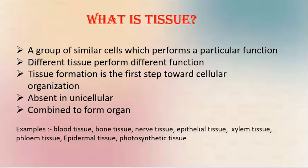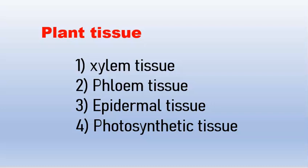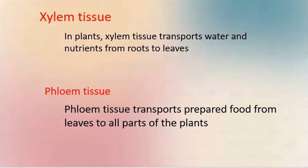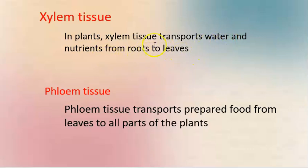Plant tissue includes xylem tissue, phloem tissue, epidermal and photosynthetic tissue. In plants, xylem tissue transports water and nutrients from roots to leaves. Water, nutrients, and dissolved salt are transported through xylem.